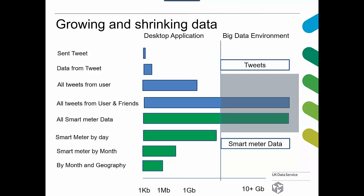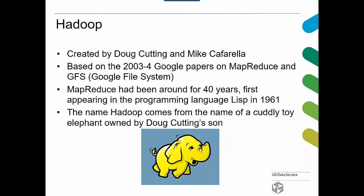And that's where Hadoop comes in. Hadoop was created by Doug Cutting and Mike Cafarella in 2003–2004. It's based on the Google file system. MapReduce itself has been around for 40 years — it first came in the language Lisp in 1961. The elephant icon always used to depict Hadoop comes from a cuddly toy elephant owned by Doug Cutting's son.